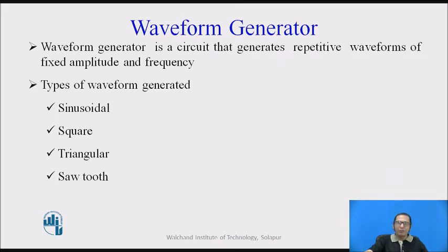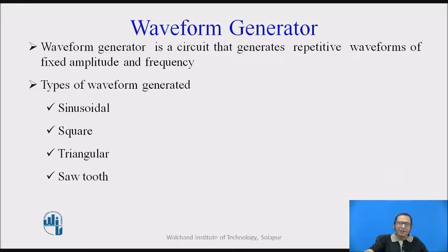As we know, a waveform generator is a circuit that generates repetitive waveforms of fixed amplitude and frequency. We can design different types of waveforms which can generate a sinusoidal signal, a square wave signal, a triangular wave signal, or a saw tooth wave signal. In today's lecture, we are going to look at the circuit which can generate both square and triangular waves.